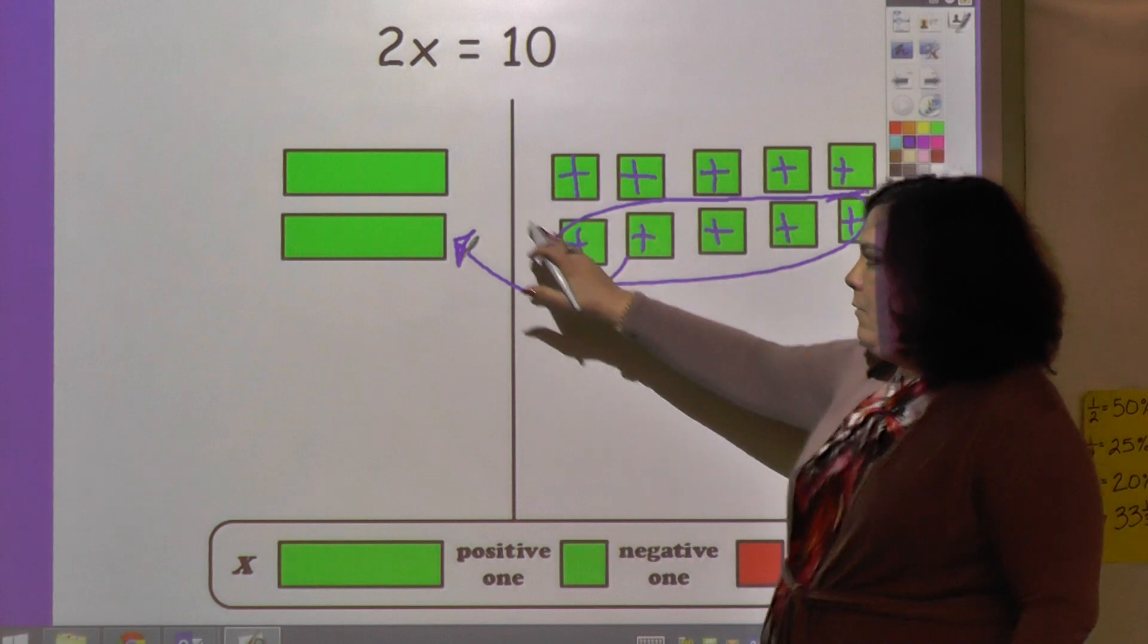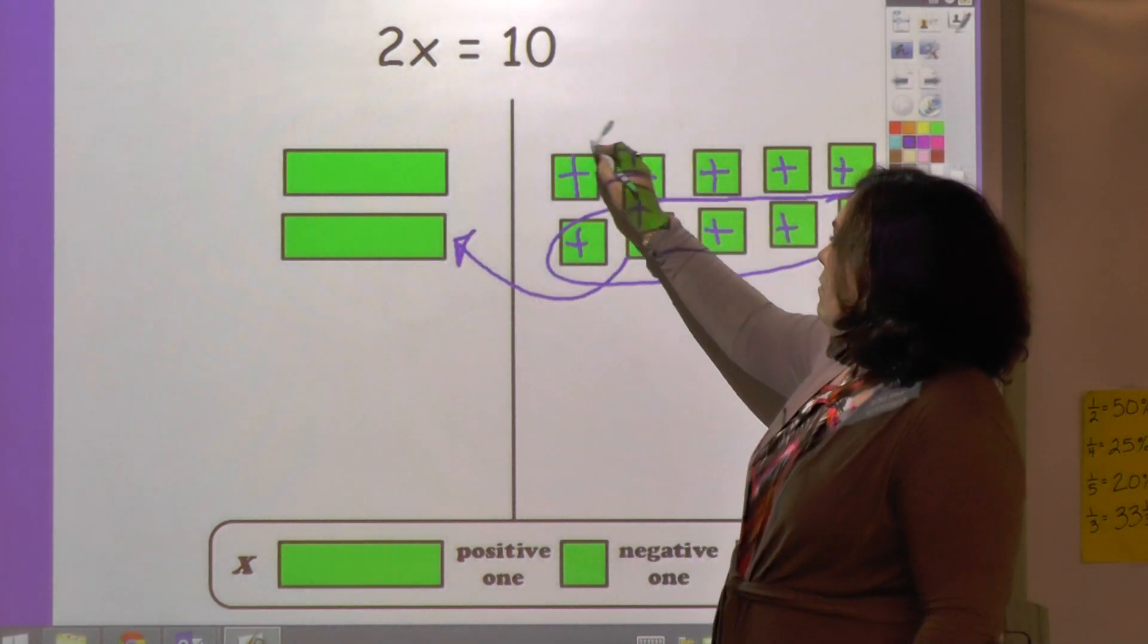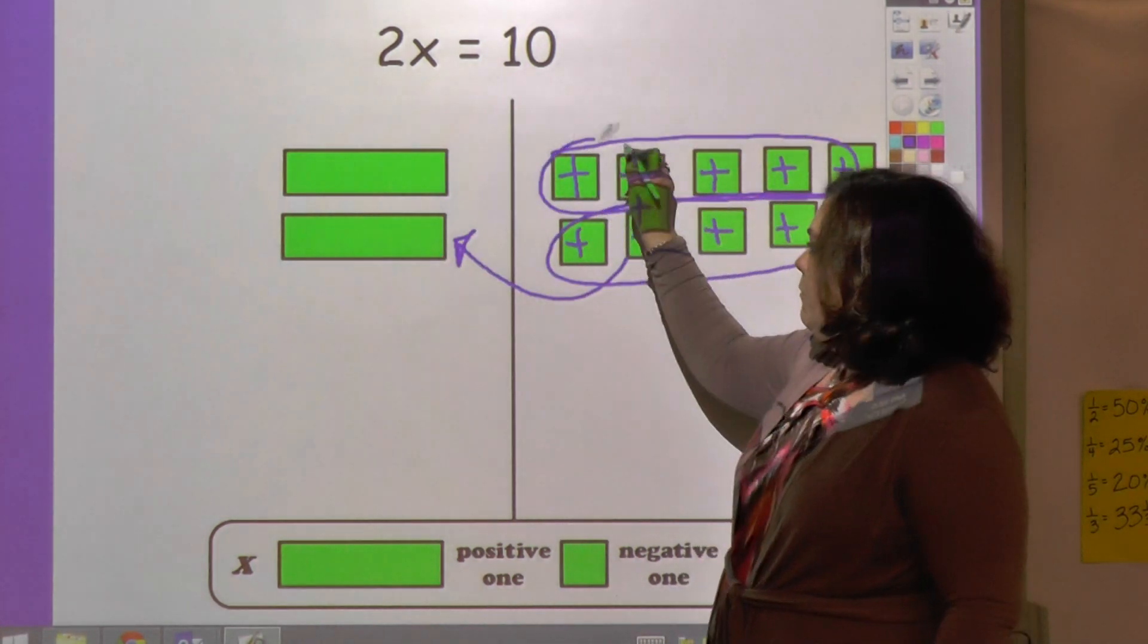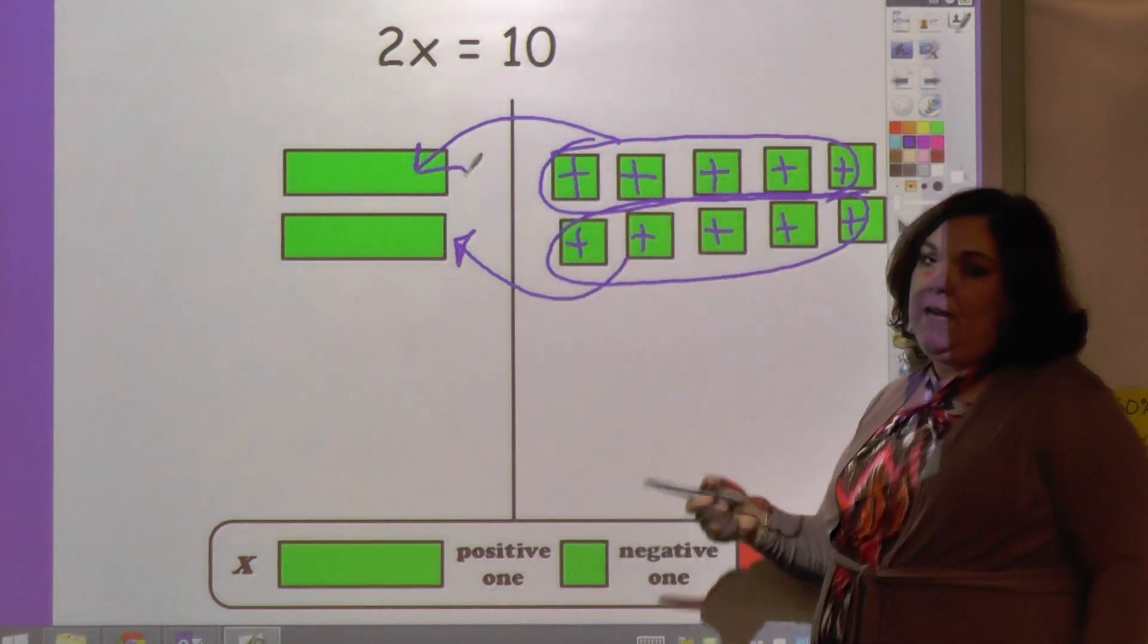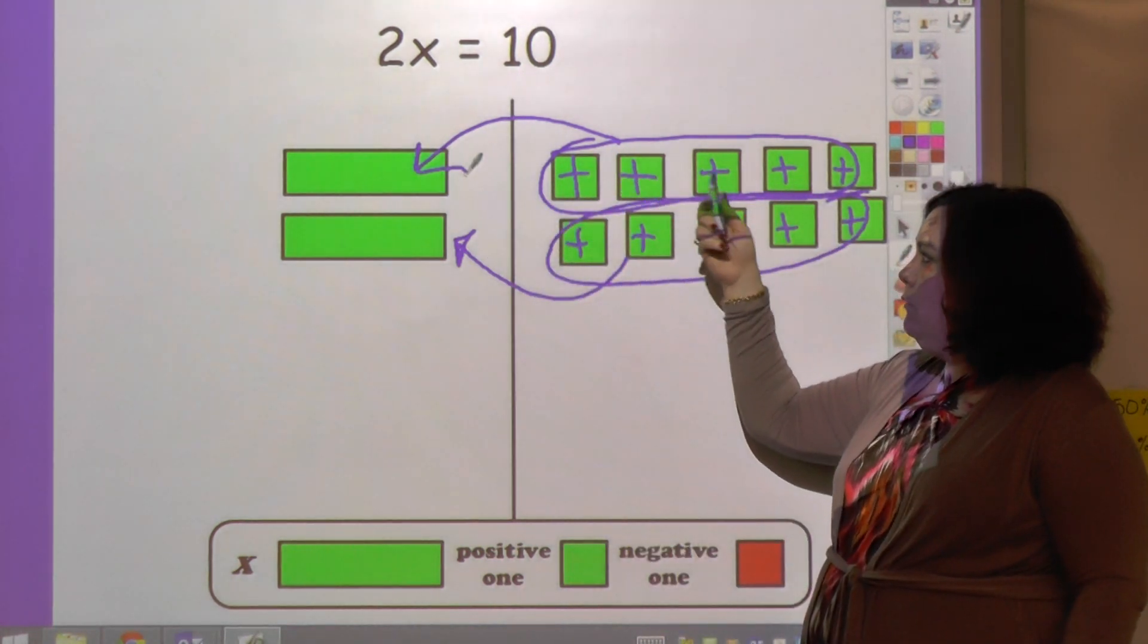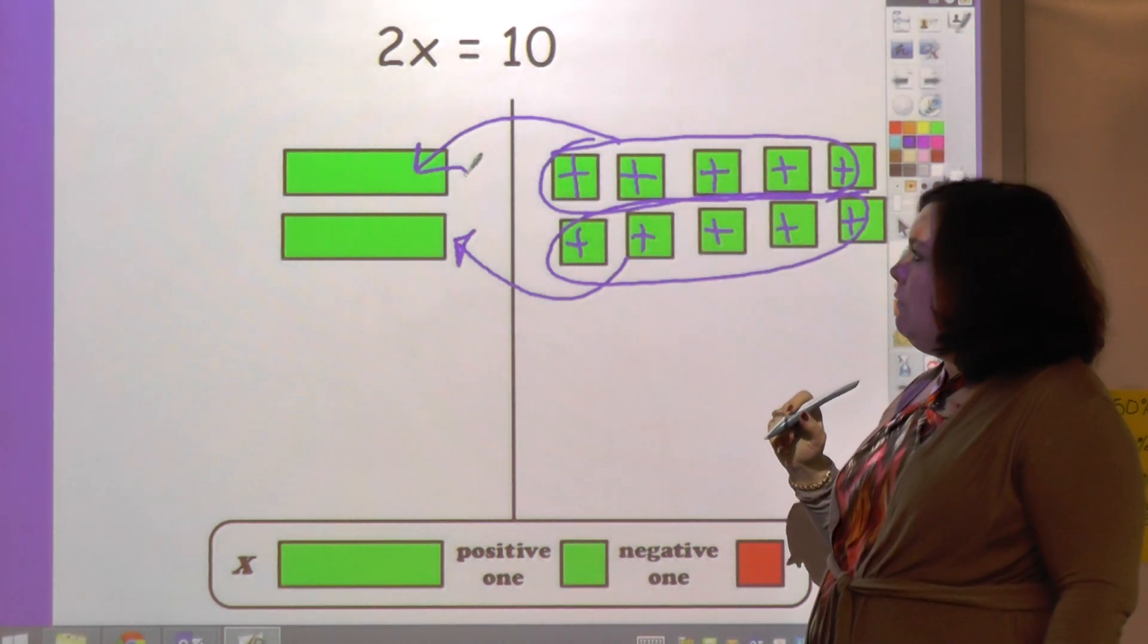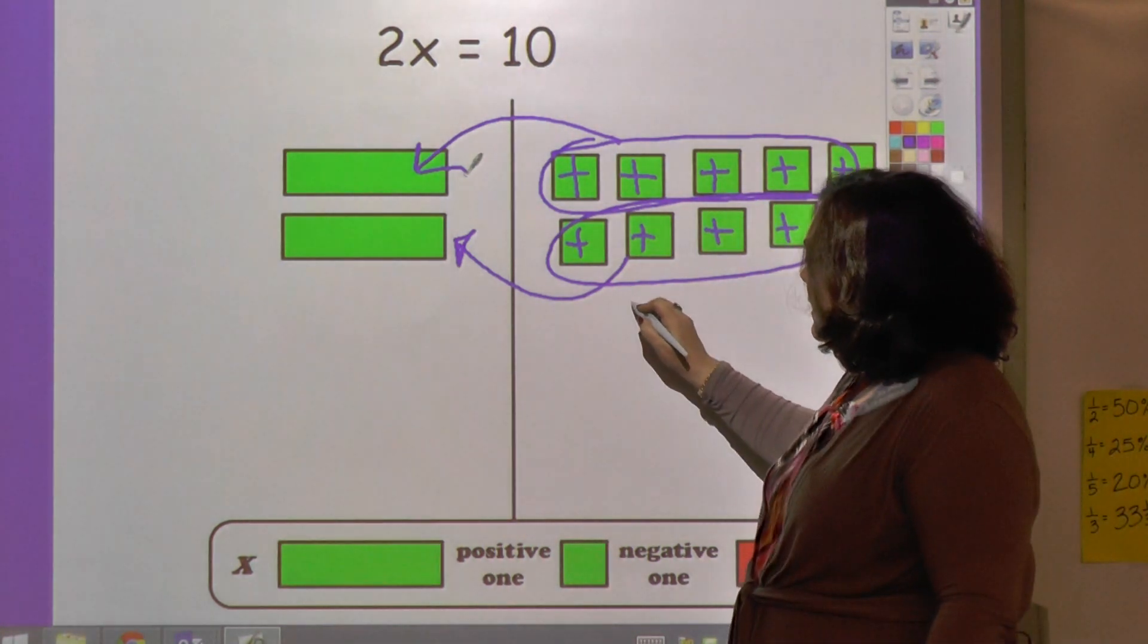Whatever's over here has to go into two parts, so this groups to that, and how many are in each grouping that goes over? One, two, three, four, five.